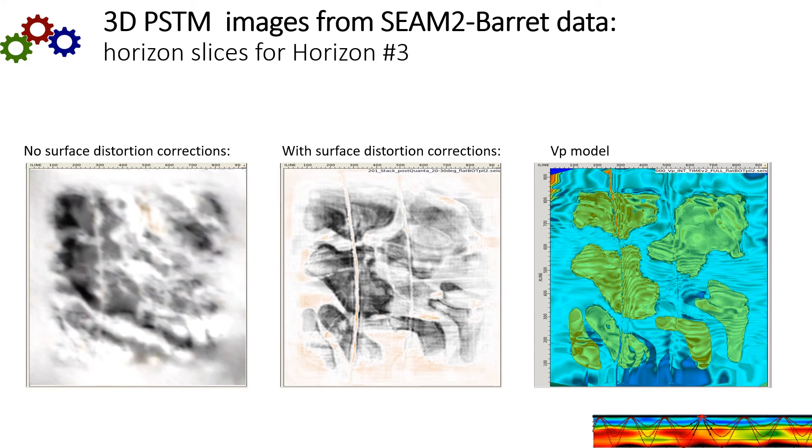Here's a demonstration of how the surface wavelet distortion harms the imaging. So these are horizon slices from 3D PSTM for the SEAM tube data. So the correct answer is over here on the right. This is the model. And on the left is the horizon slice image with no surface distortion correction. Now the result looks plausible, but you can see it's wrong. If we correct for surface distortion, we can see we get a much better image, and it's much more accurate than without. So this is an example of the importance of resolving the regional surface distortion.